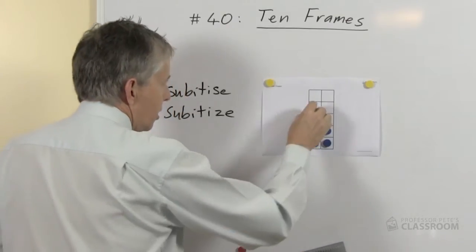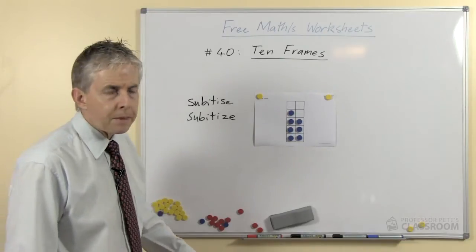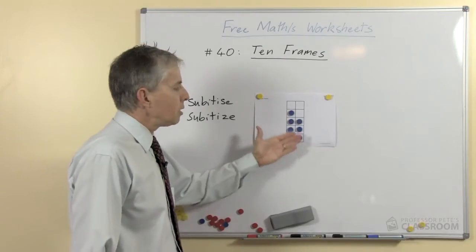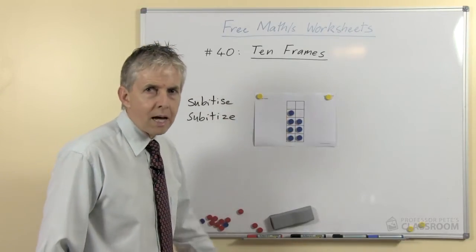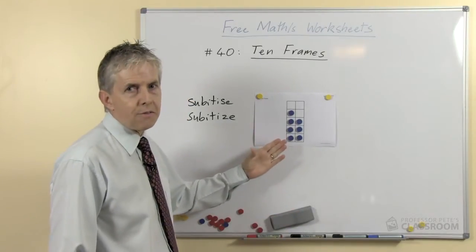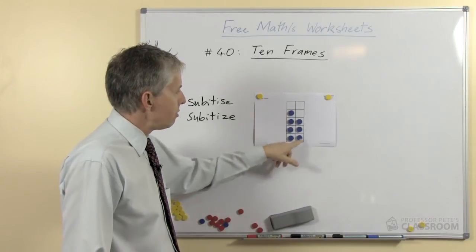And say for example, how many are there now? Once the students are familiar with the basic numbers it won't be hard for them to see that that is the number seven because there are four here and three there.